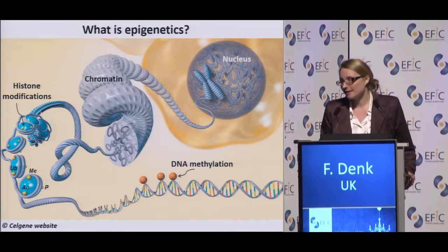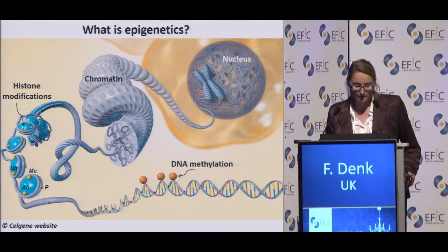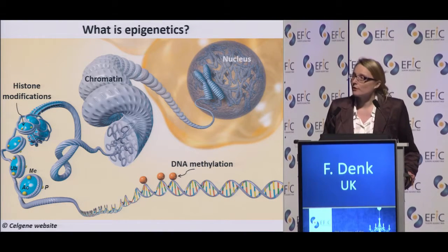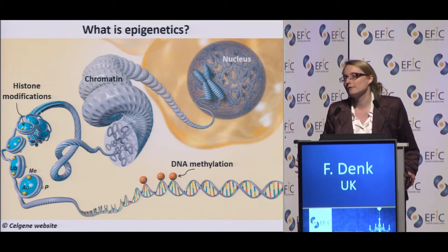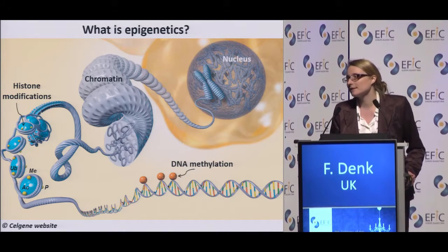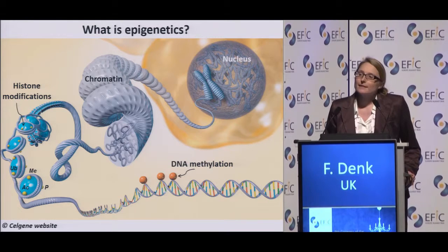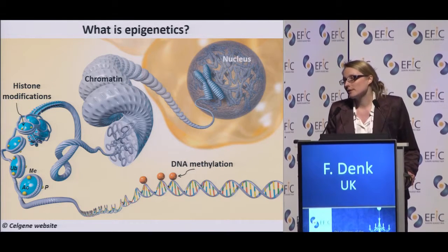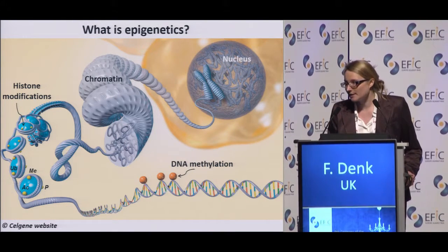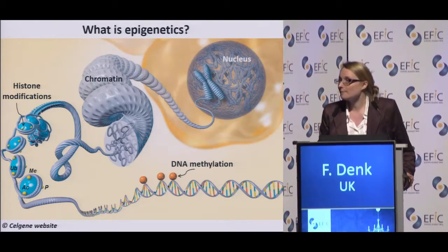The DNA itself can be methylated, usually at its cytosine-guanine runs, and it is then coiled tightly around histone proteins that have lysine residues which can be chemically modified. They can be acetylated, phosphorylated, and methylated. The nature of these modifications determines how tightly the DNA is wrapped and what kind of transcription factors are being recruited.